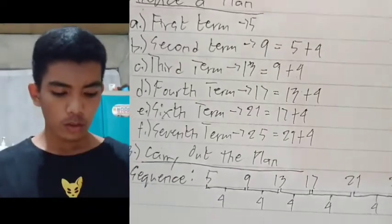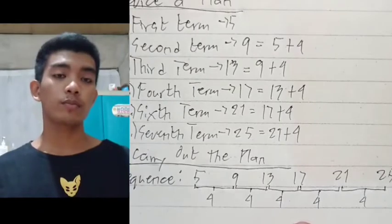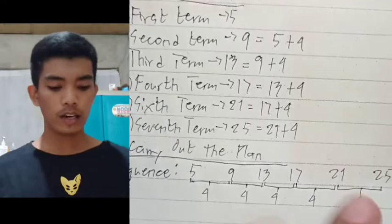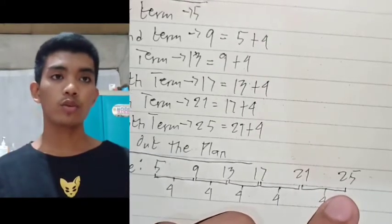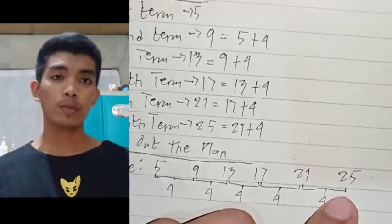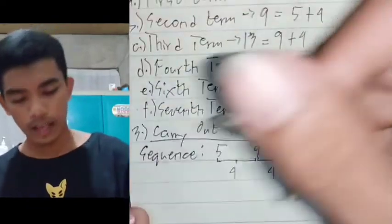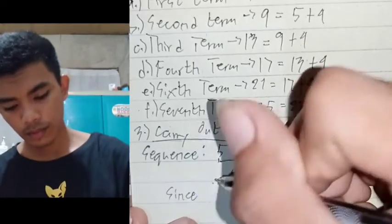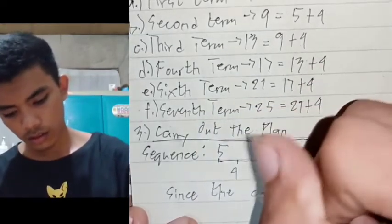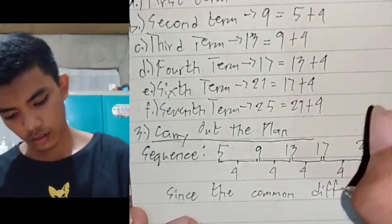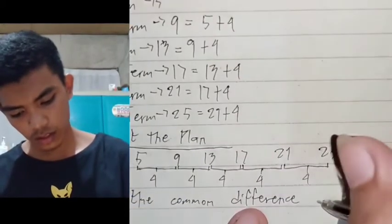We can be sure that the next term would also have 4 units of difference from the last term, which is 25.